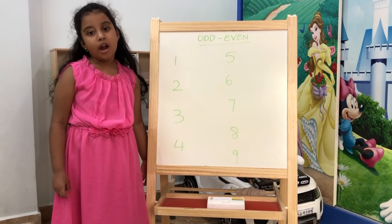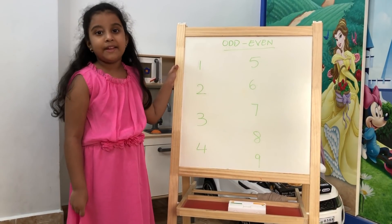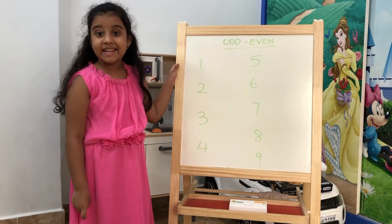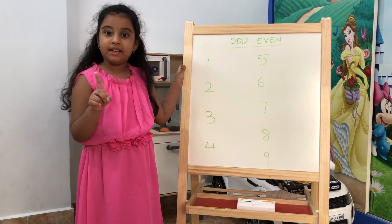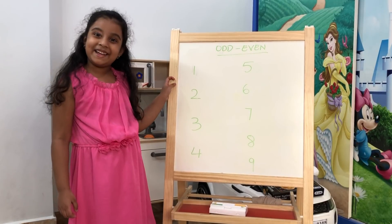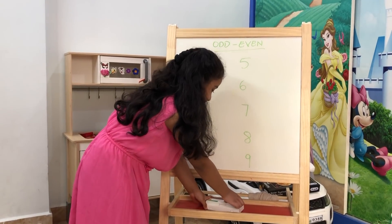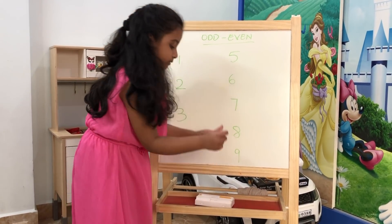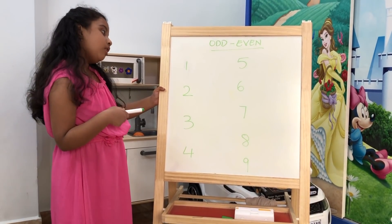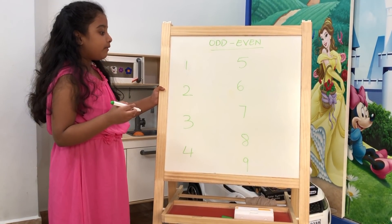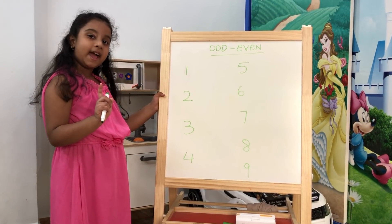Let us find odd and even numbers. For an odd number, we have a single standing line. For an even number, there is no single standing line. Let us find — because in this one, we will write one single standing line.